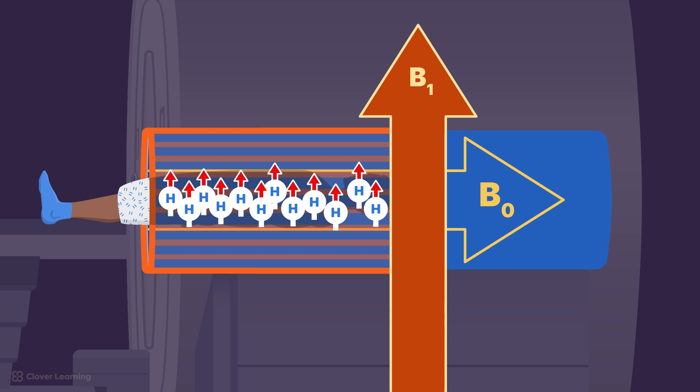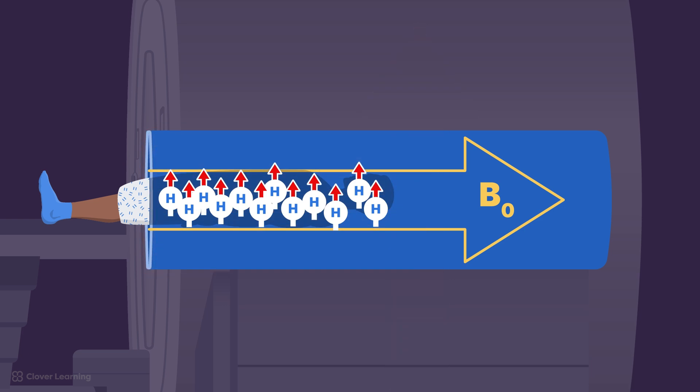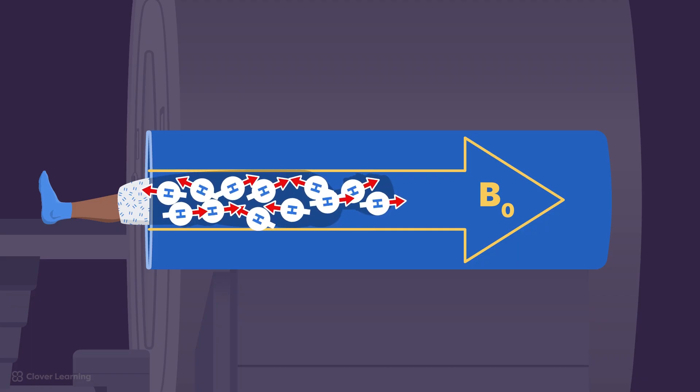When the energy of the RF pulse is removed, the spins begin forcing neighboring spins out of sync or dephase, and this dephasing causes a loss of coherent magnetization in the transverse plane.